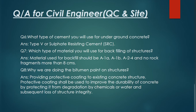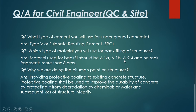Question number seven: which type of material will you use for backfilling for a structure? Mostly under and near the foundation for any structure, we use A1A or A1B material and also A2P. No rock fragments more than 8 cm are allowed. All the material is specified as A2P. The fragments of rock will be not more than 8 cm.